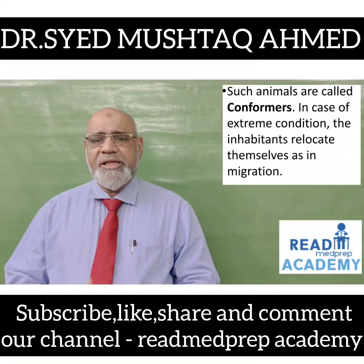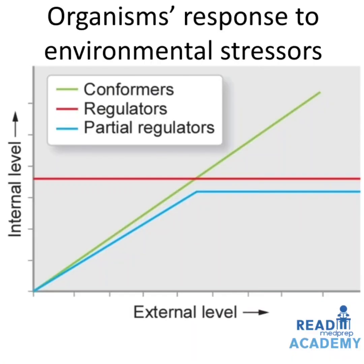In case of extreme conditions, the inhabitants relocate themselves, as in migration. In this graph, you can see the organism's response to environmental stresses. On the y-axis is the internal level and the x-axis is the external level. The conformers continuously change and at a certain level they maintain themselves, whereas for regulators it is a straight line.